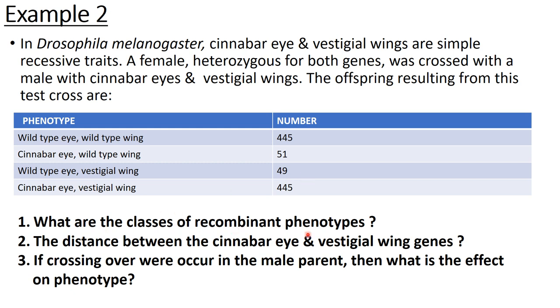What are the classes of recombinant phenotypes? Obviously these two are the classes of recombinant phenotypes: cinnabar eye wild type wing, and wild type eye vestigial wing. After the cross, the results are like this. The distance between the cinnabar eye and vestigial wing genes - now you have to find the distance. Between which genes? Cinnabar eye and vestigial wings. What is the formula? Total number of recombinants divided by total number of offsprings into 100. This one will be equal to 100 and the total of these will be equal to 1000. The resultant will be 10 centimorgan, the distance between these two genes.